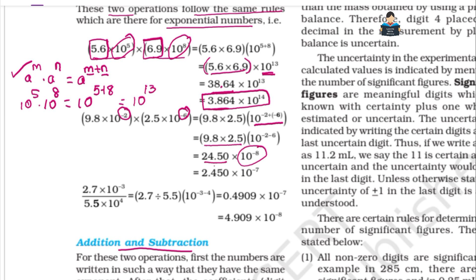We have the decimal result 24.50. Now we need to move the decimal from right to left, which gives a positive power.